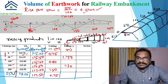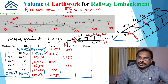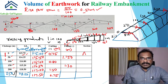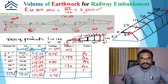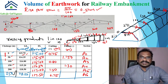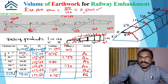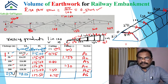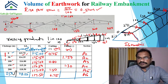Now we identify sections A1, A2, A3, A4, A5, and A6 corresponding to the chainages. These sections are seen in the isometric view of the embankment. Wherever the height difference is positive it is cutting, and where it is negative it is filling.